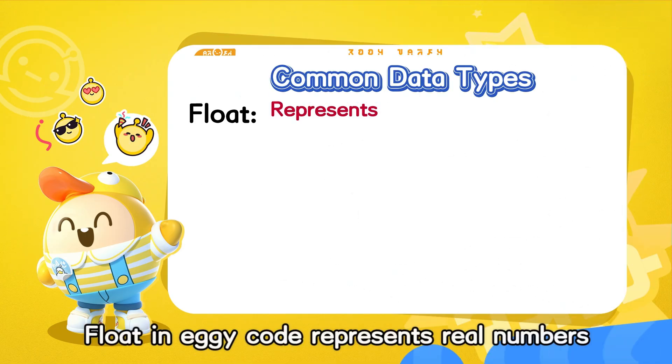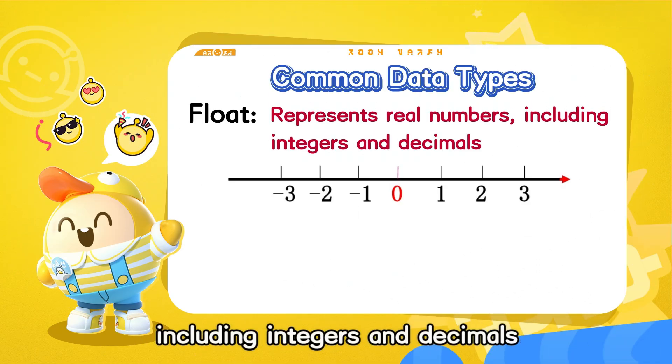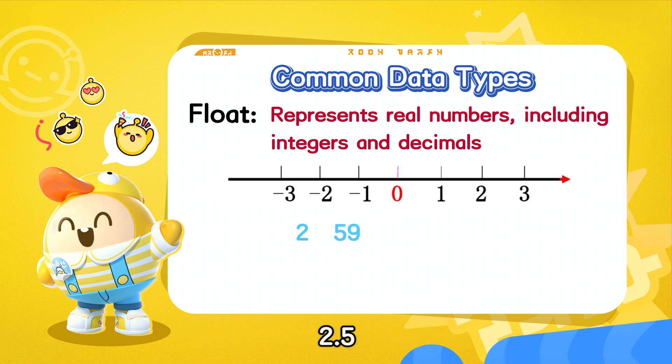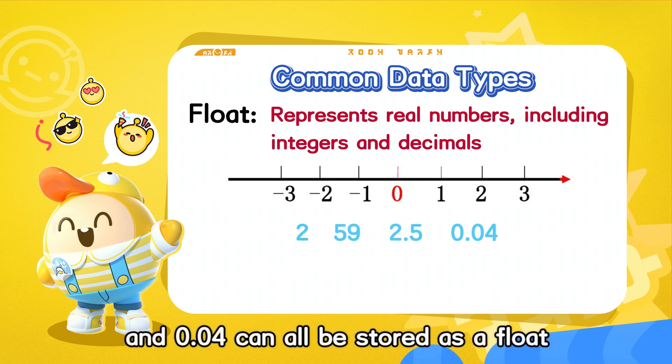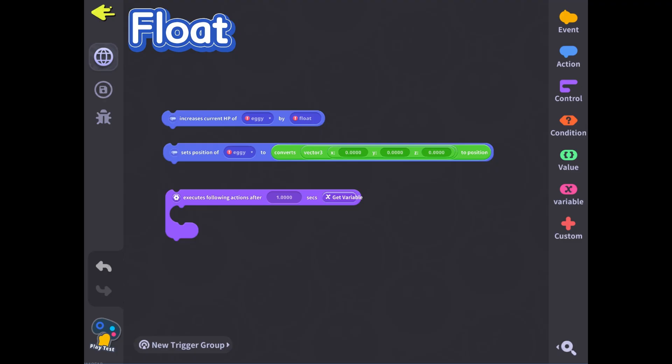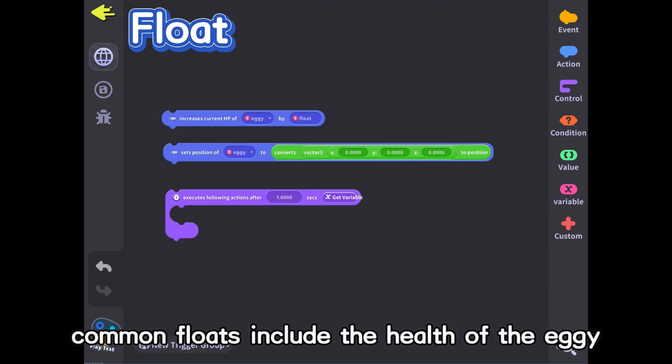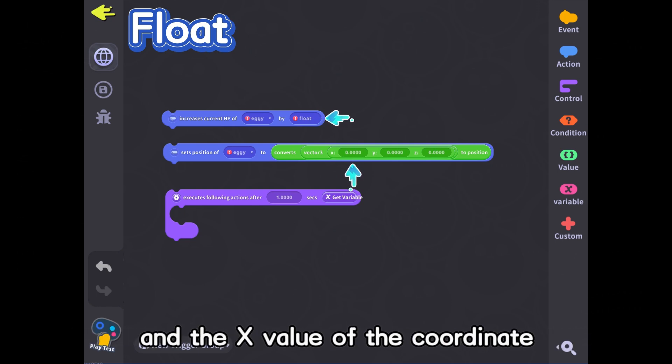Float in Eggie code represents real numbers, including integers and decimals. 2, 59, 2.5, and 0.04 can all be stored as a float. In the game, common floats include the health of the Eggie and the x value of the coordinate.